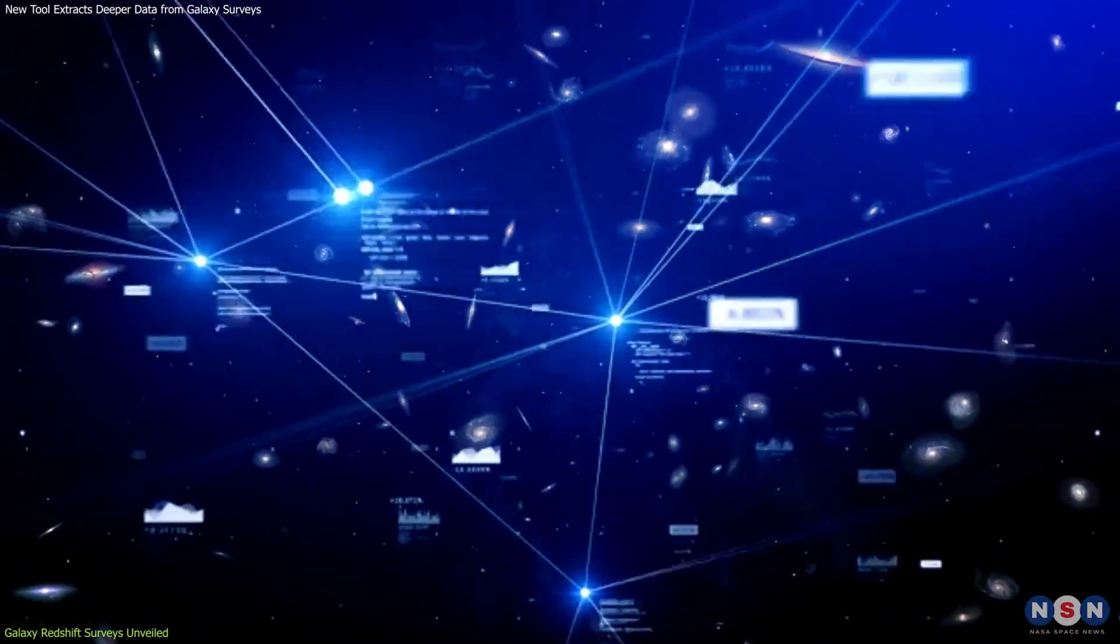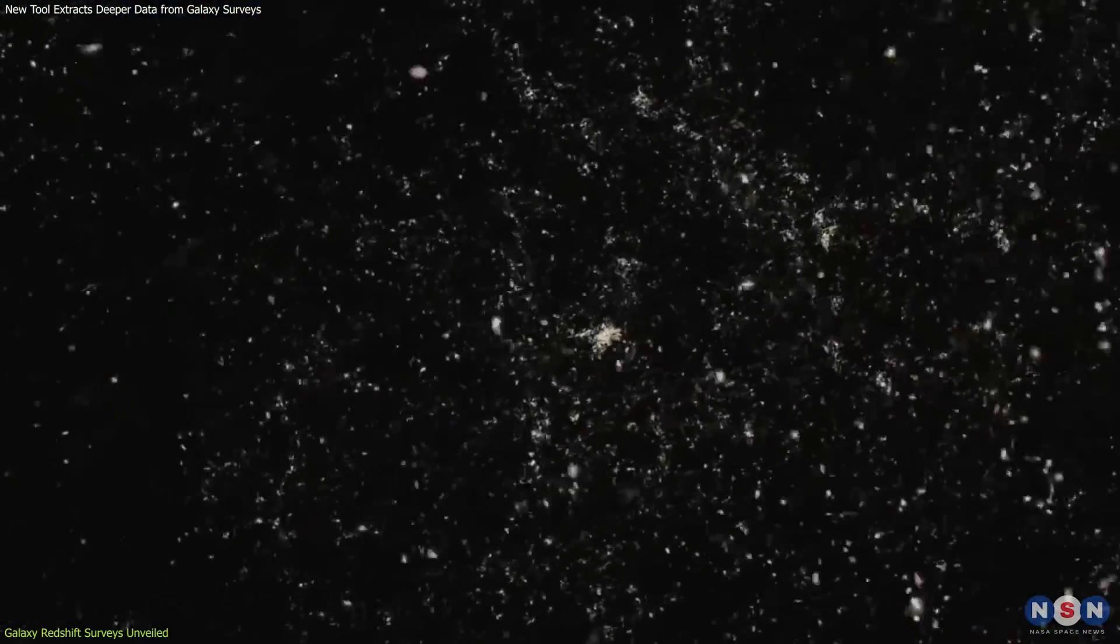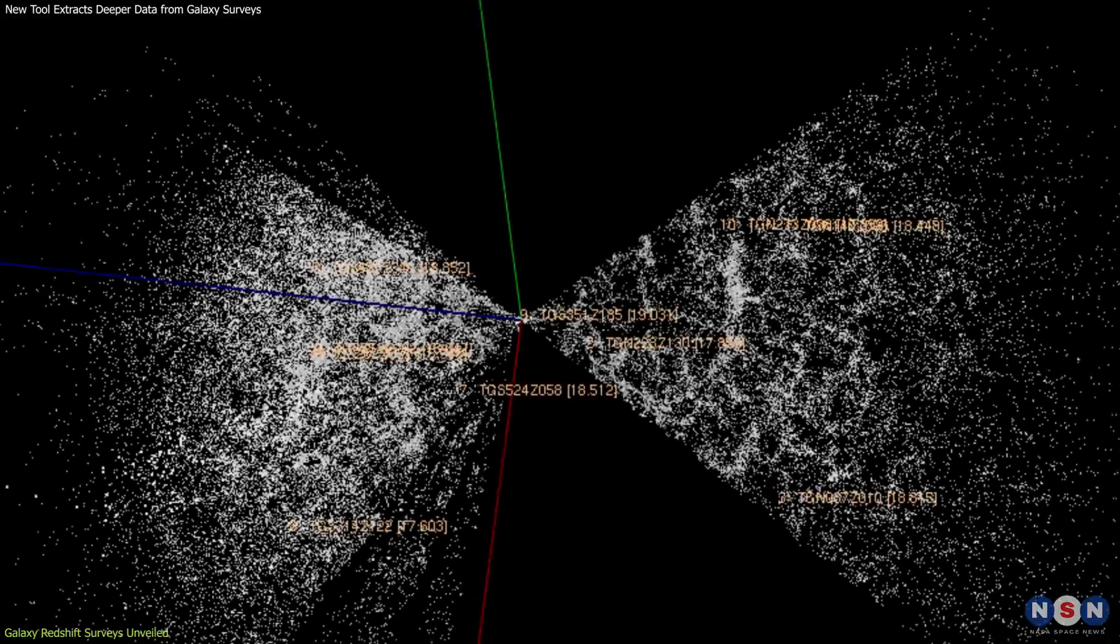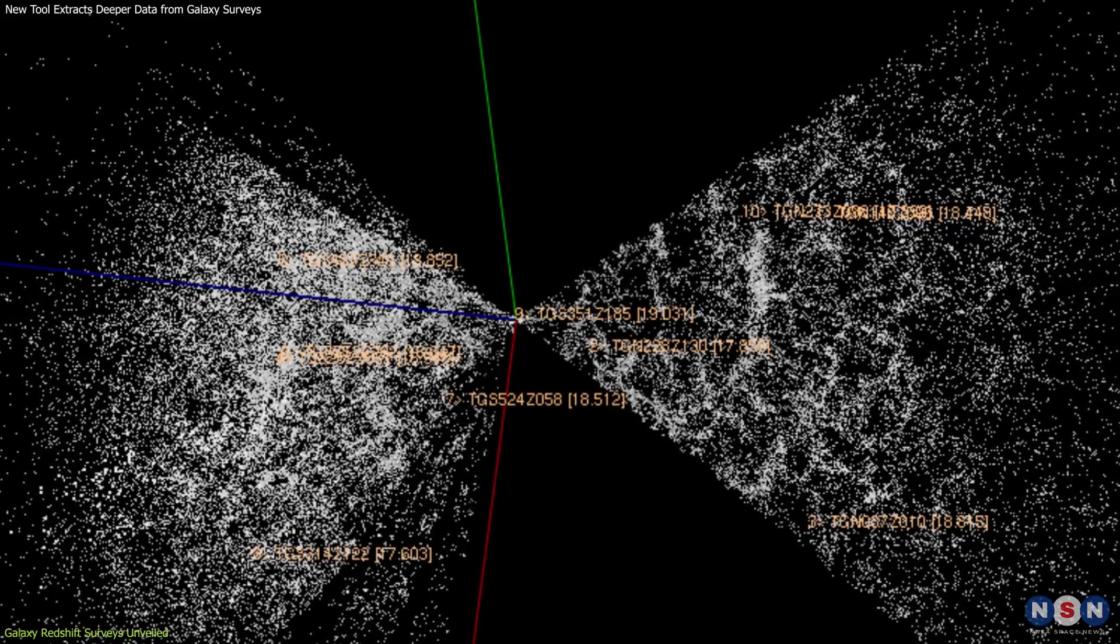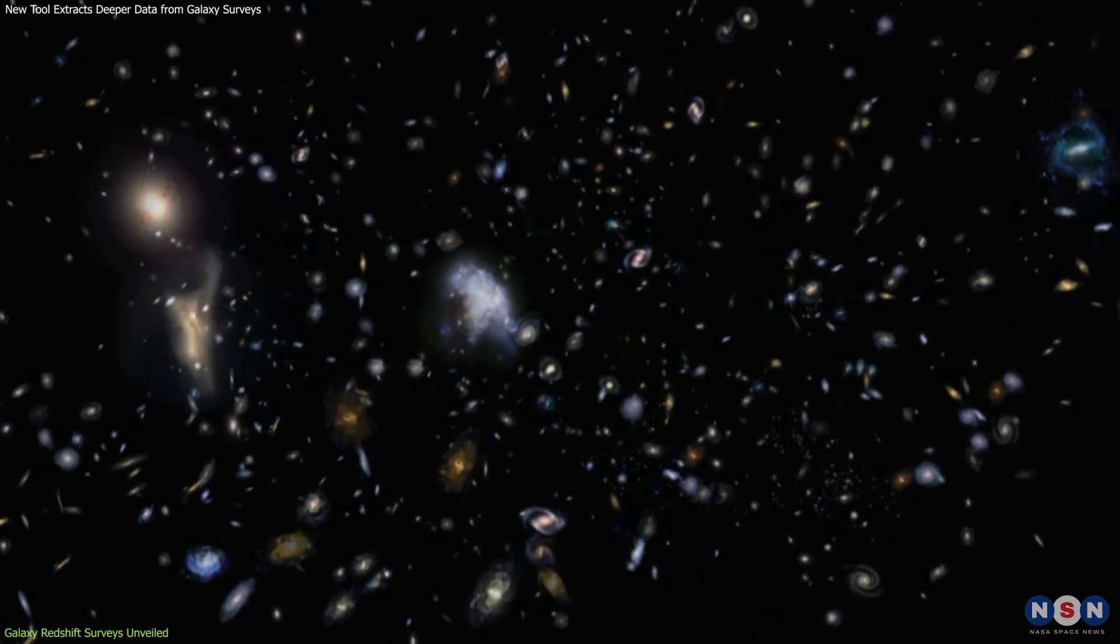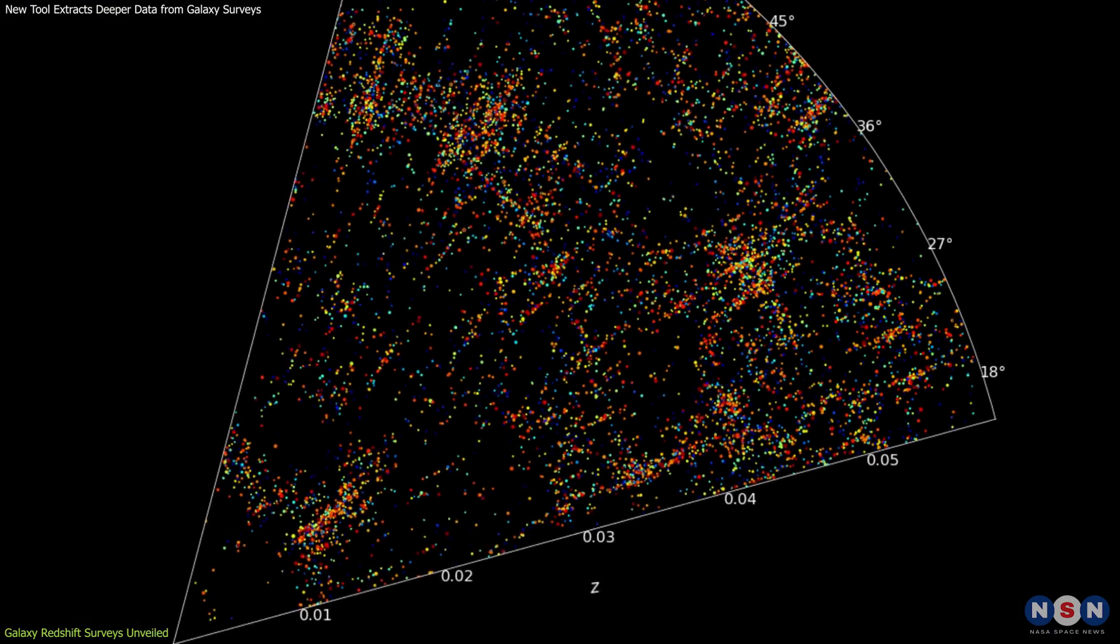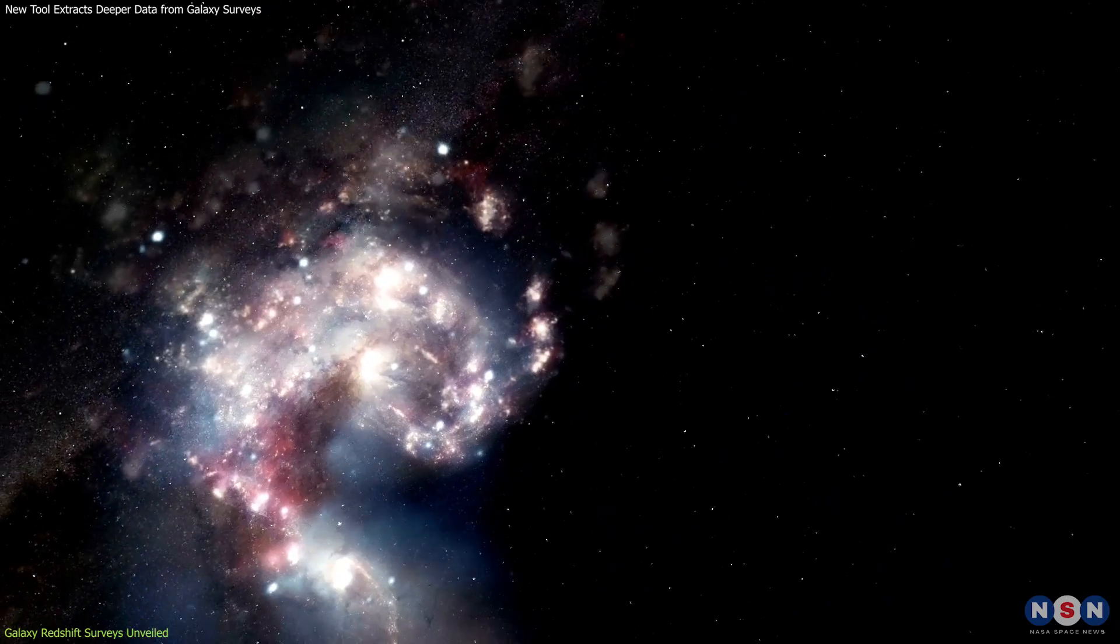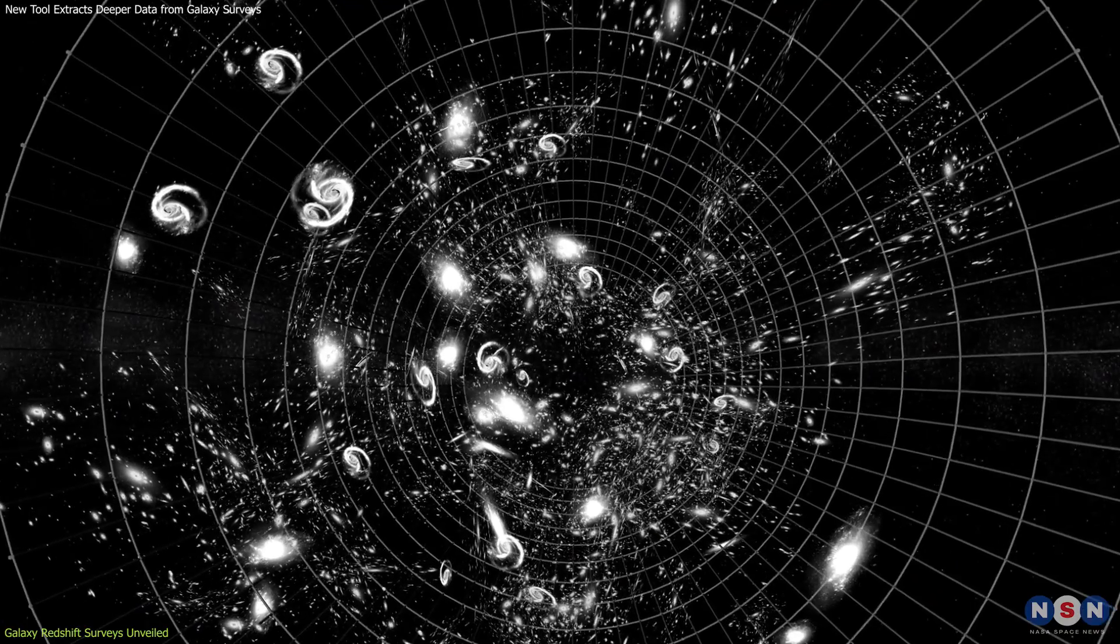This measurement is a direct indicator of a galaxy's velocity and distance, providing a three-dimensional map of the universe across different epochs. By examining millions of galaxies, these surveys provide a 3D map of the universe at various points in its history. This large-scale structure, often referred to as the cosmic web, includes clusters of galaxies, enormous filaments, and great voids.